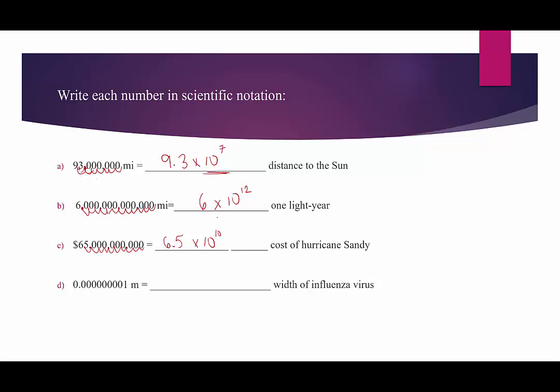And our last example, we have this itty bitty number, and it's the width of an influenza virus. We need now to make the number bigger. This is some teeny tiny number. We need to get it to become a number between 1 and 10. So this time, however many times we move the decimal point, we're actually going to say that it's negative because we're really having to divide by 10 a bunch of times to go from scientific notation back into standard form. So let's count. We have 1, 2, 3, 4, 5, 6, 7, 8. This is 0.1. That's 9 times.